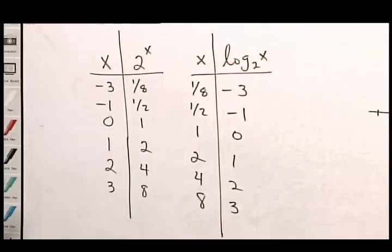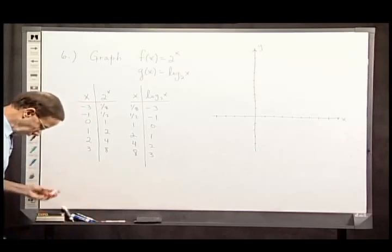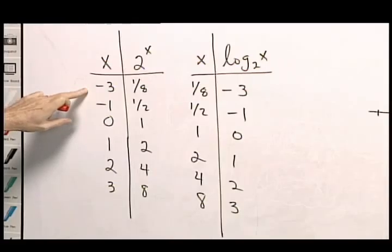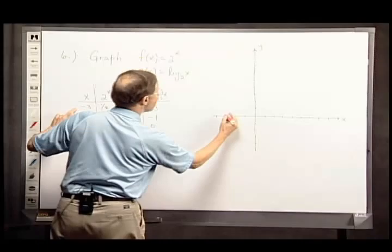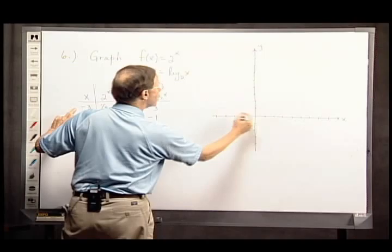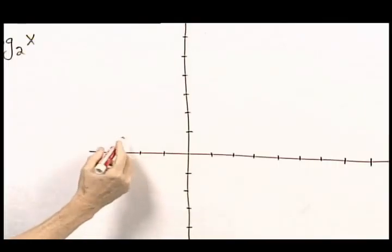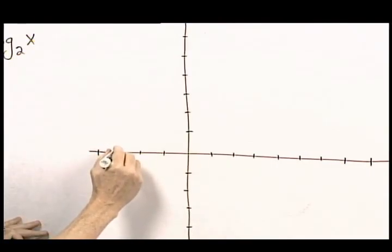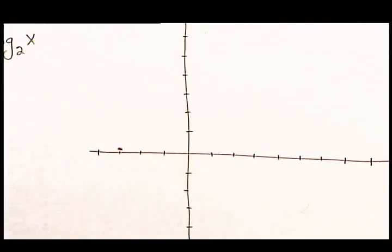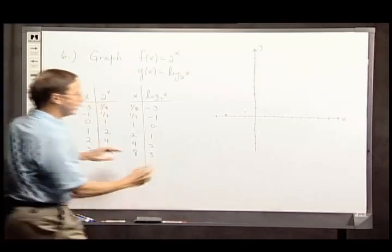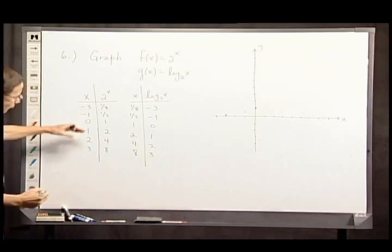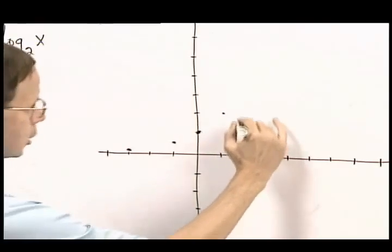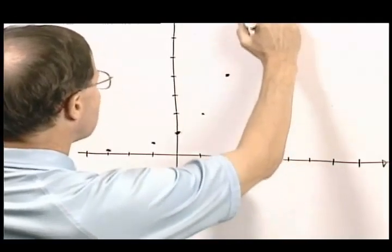So now I have some convenient values to plot. I'm going to plot them here. This guy, the exponential function. If x is negative 3, that puts me over here. I have a y value that is 1 eighth. Each tick stands for 1, so I'm only going 1 eighth of that distance up. It's 1 eighth. Negative 1 has a value of 1 half. 0 has a value of 1.